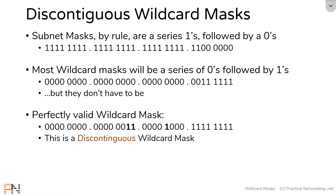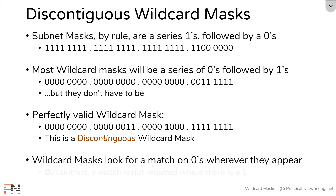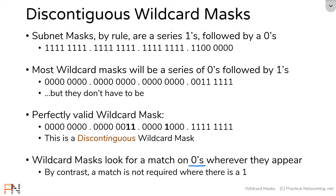Now, what we learned in the last video still applies. A wildcard mask will always look for a match wherever there is a zero. By contrast, wherever there is a one, the wildcard mask will ignore those bits. So let's talk about how that works.